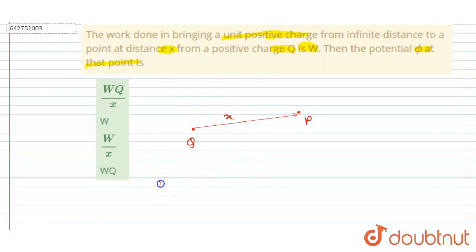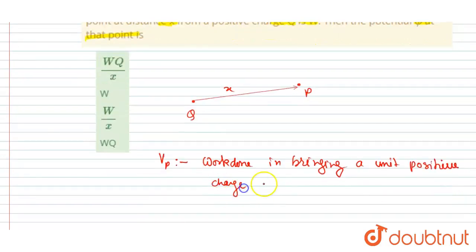So we know that potential at any point P will be equal to work done in bringing a unit positive charge from infinity to that point.